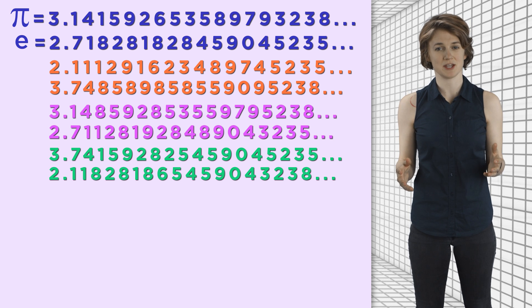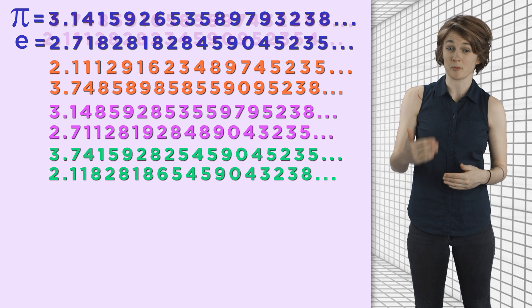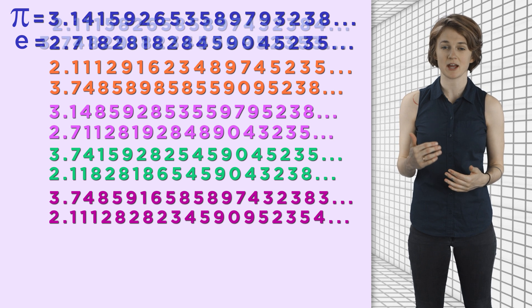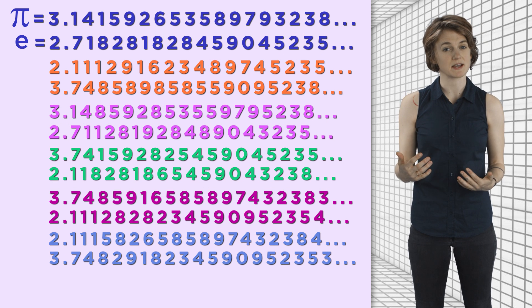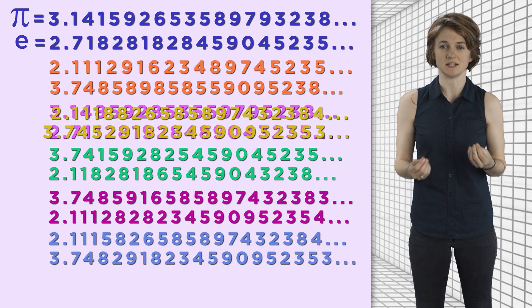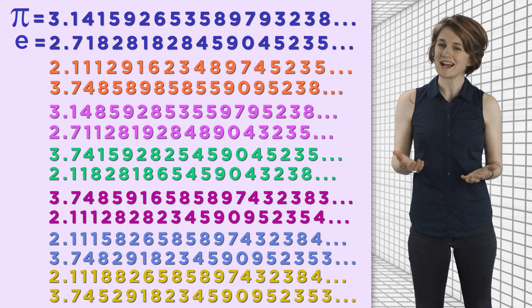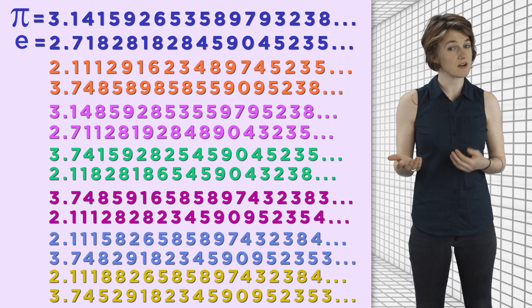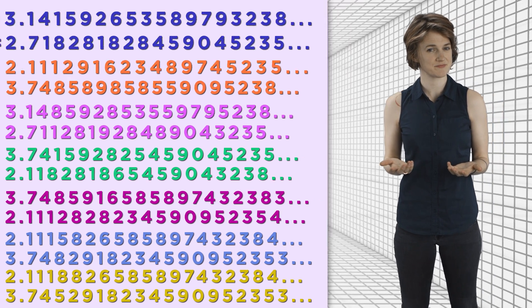With infinite time and patience, we could just write down a big, endless list of all the possible pairs of numbers that arise by switching infinitely many digits of pi and e. What kind of numbers appear on that list? Are there rational numbers? Are there irrational numbers?